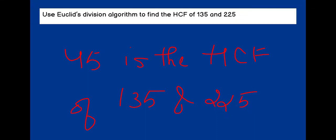Therefore, I can say that 45 is the HCF of 135 and 225. In this way, we can compute the HCF of two numbers with the help of Euclid's division algorithm.